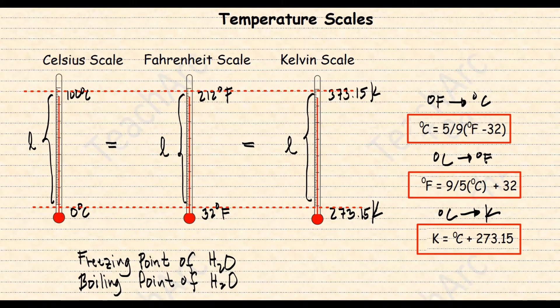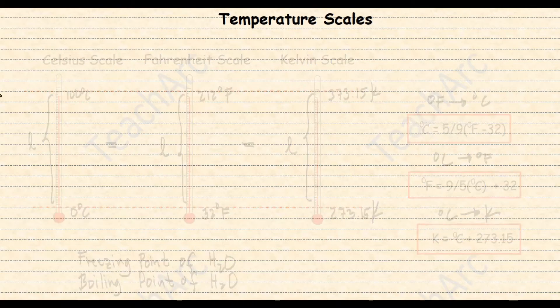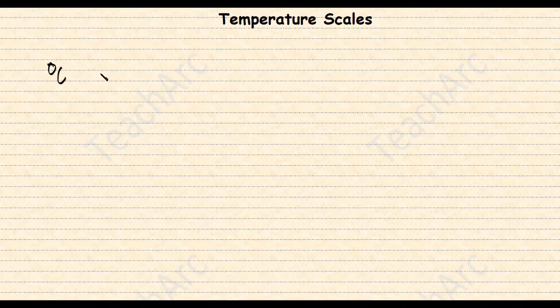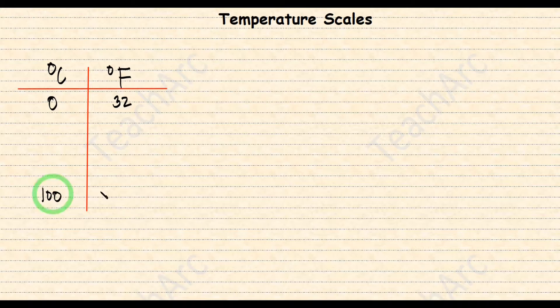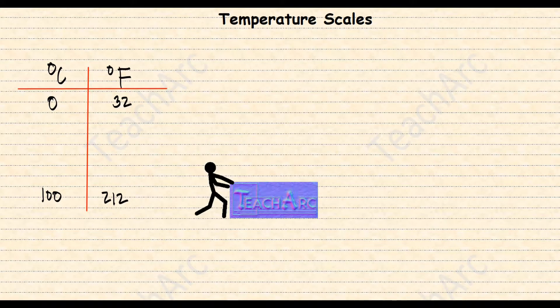But before we start converting and solving, it is right to know and appreciate how these formulas were derived. We look at Celsius to Fahrenheit first. As I've mentioned a while ago, 0 degrees Celsius is 32 degrees in the Fahrenheit scale, and 100 degrees Celsius is 212 in the Fahrenheit scale.